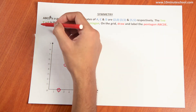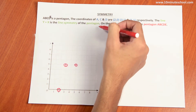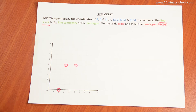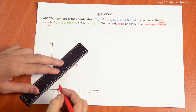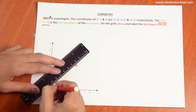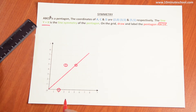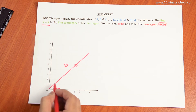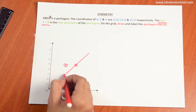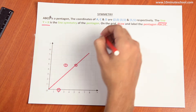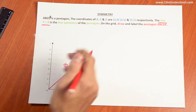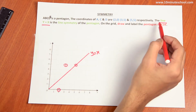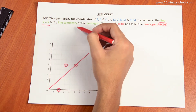The line y equals x is the line of symmetry of the pentagon. What is the y equals x line? The line y equals x is the line of symmetry of the pentagon.